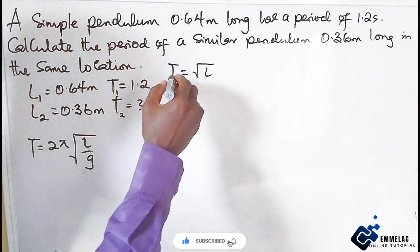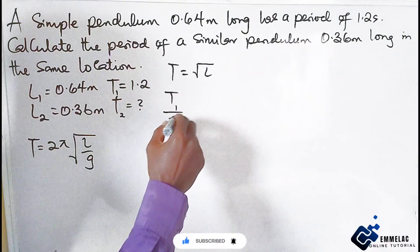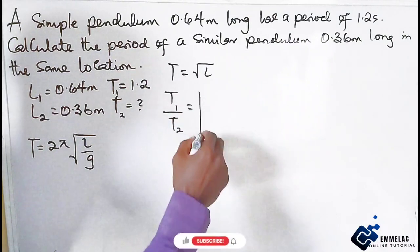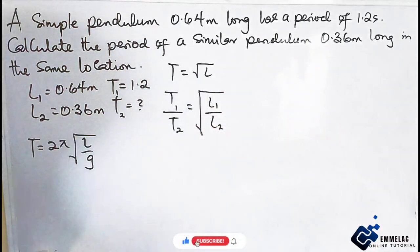So here, we can now see that T1 over T2 equals the square root of L1 over L2.